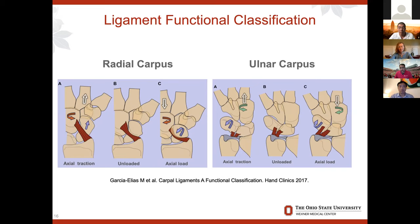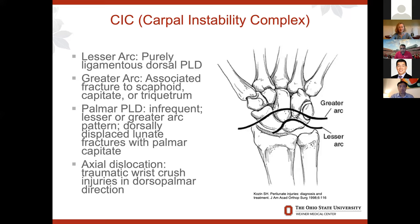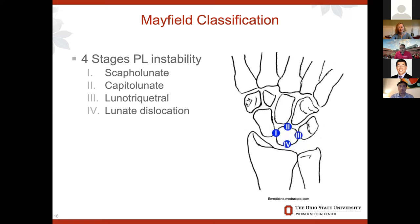The third type is carpal instability complex. You can get a lesser arc injury, which is purely ligamentous, or a greater arc injury, which is associated with a fracture — such as a trans-scaphoid or transcapitate perilunate dislocation — involving both dissociative and non-dissociative components. The palmar perilunate dislocation is infrequent. Mayfield also describes a classification of perilunate instability going from the scapholunate clockwise to the capitolunate, lunotriquetral, and then a complete lunate dislocation.